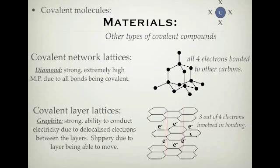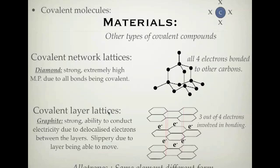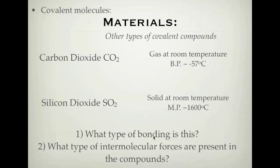Both diamond and graphite are made up only of carbon, but in different forms. These are called allotropes - the same element in a different structural form. These two are allotropes of carbon, and there are a few others, but you need to know about covalent network lattices and covalent layer lattices.